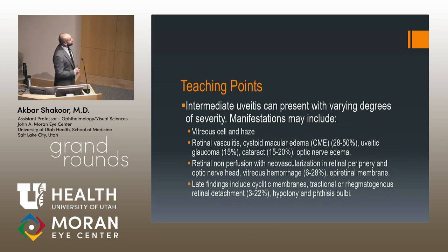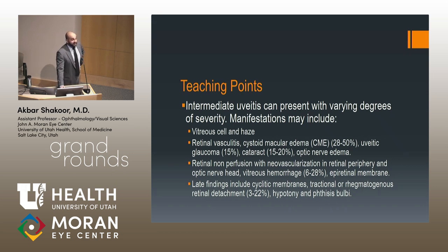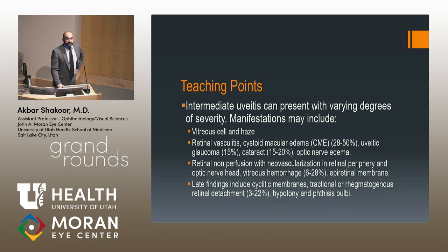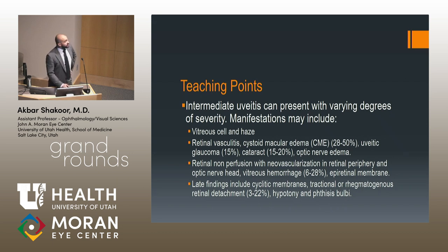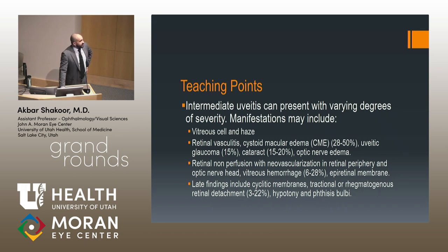Intermediate uveitis can present with varying degrees of severity. Manifestations include vitreous cell and haze; retinal vasculitis is a pretty common feature. CME is the most common cause of irreversible vision loss in these patients, along with cataract, glaucoma, and optic nerve edema. Retinal non-perfusion can cause neovascularization on the optic nerve or elsewhere, vitreous hemorrhage in 6 to 28% of cases, and epiretinal membrane. Late findings include cyclitic membranes, tractional or rhegmatogenous retinal detachment, hypotony, and phthisis.